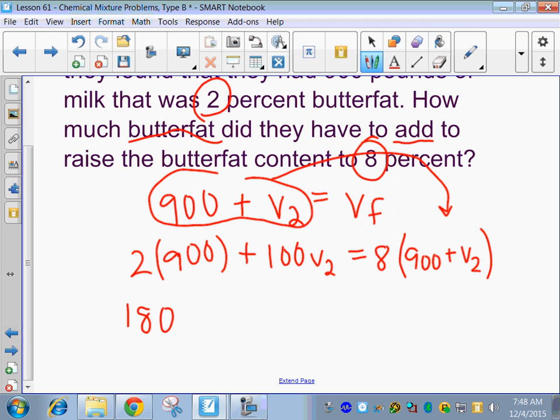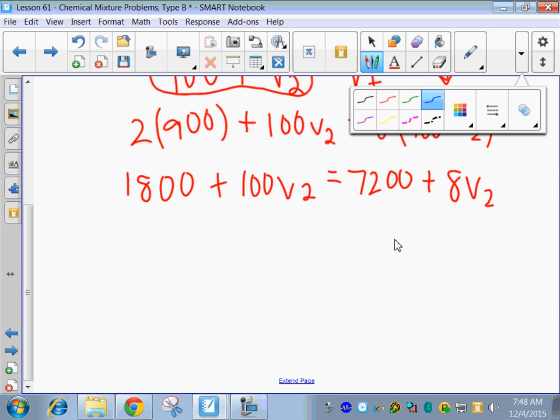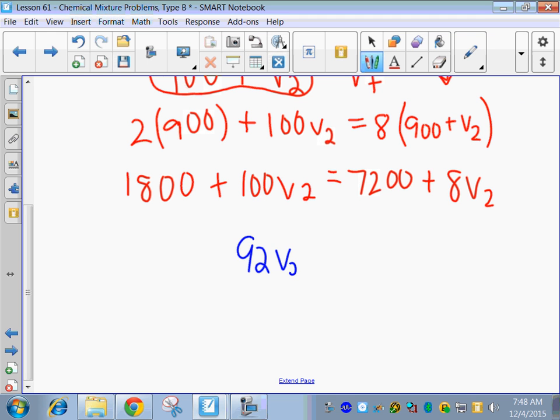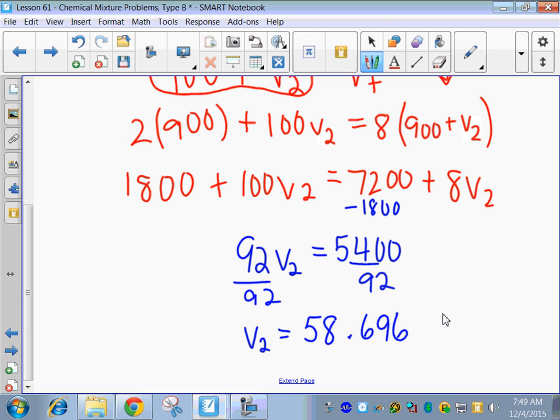And we can solve now. 2 times 9 is 18 plus the two zeros here, plus 100 V2. And then 8 times V2. Let's see. I need a new color. Subtract the 8 over this side probably, so I have 92 V2. And subtract the 1800 from this guy, and that gives me 5400. Divided by 92 on both sides here. And what decimal do you guys get? Do you guys get a decimal? Do you guys get that? Pounds of butterfat. Pounds disgusting.